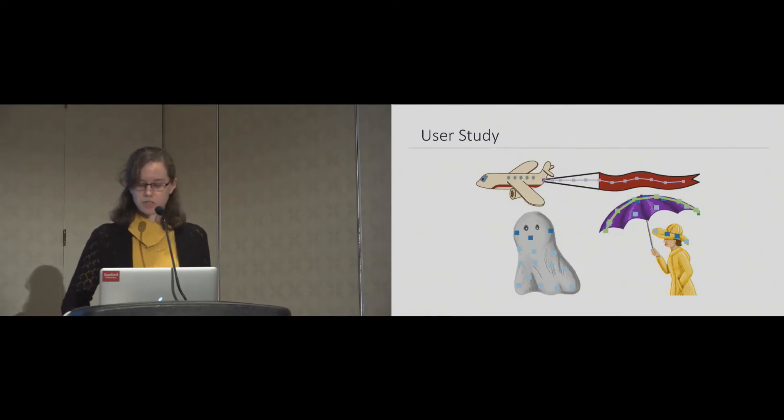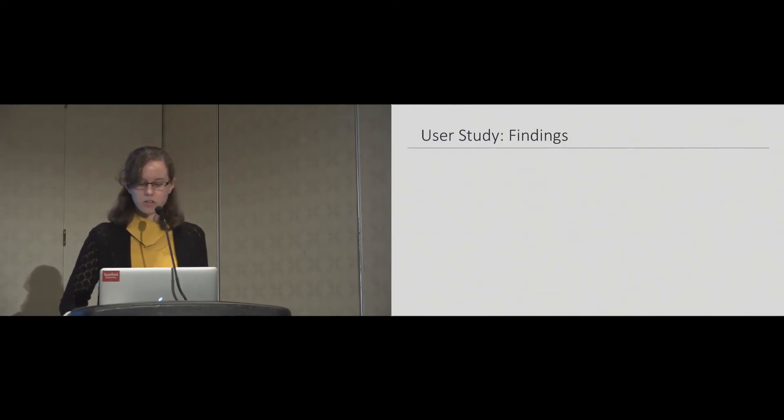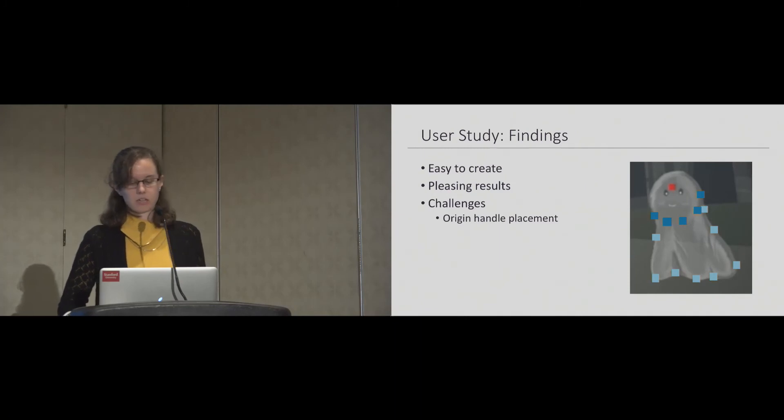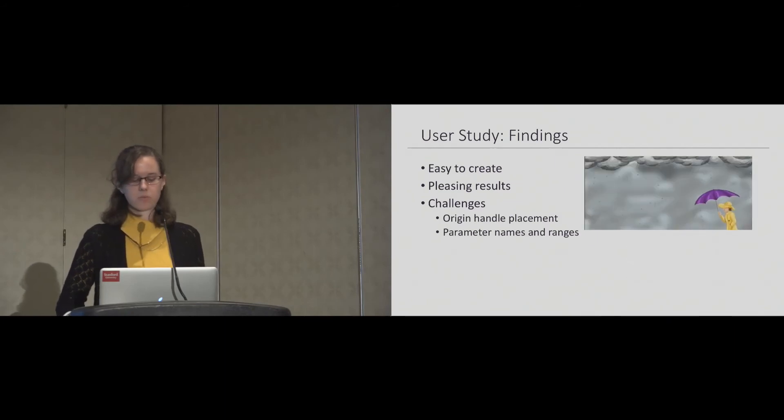To investigate the effectiveness of our approach, we conducted an exploratory study where people used our system and provided feedback on our rigging and performance-driven animation tools by animating three characters. Overall, the participants were able to quickly produce a range of secondary effects across the three tasks. They found it easy to create the various rigs and were pleased with the secondary motion that they produced. Participants had some usability challenges, such as forgetting to explicitly create an origin handle rather than creating only response handles, and some participants were also confused about the parameter names and ranges. However, after spending a few minutes adjusting the parameter settings, they were able to achieve a pleasing result.